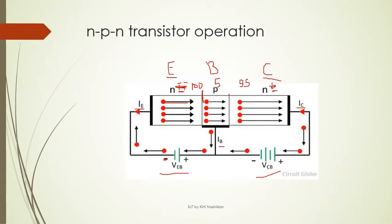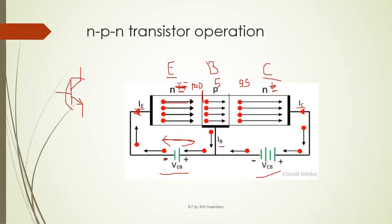In the NPN section, the conventional current flow is always from positive to negative. Though electrons actually flow inward, the conventional current in the emitter flows in the outward direction. That is why the symbol of NPN has the arrow in the outward direction on the emitter terminal. A circle around the symbol is not mandatory but can be shown. This is how the NPN transistor works.